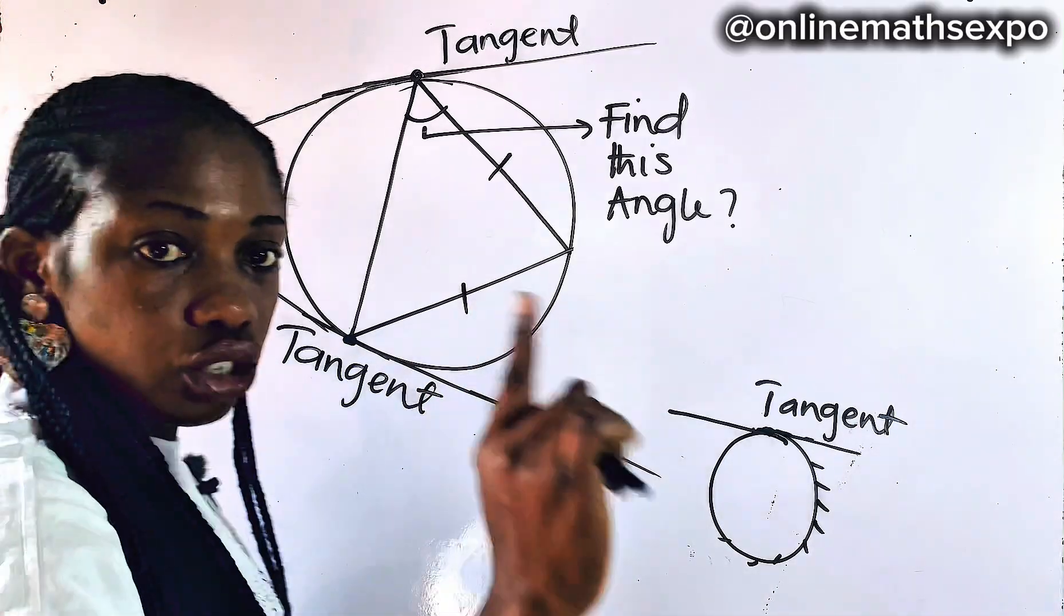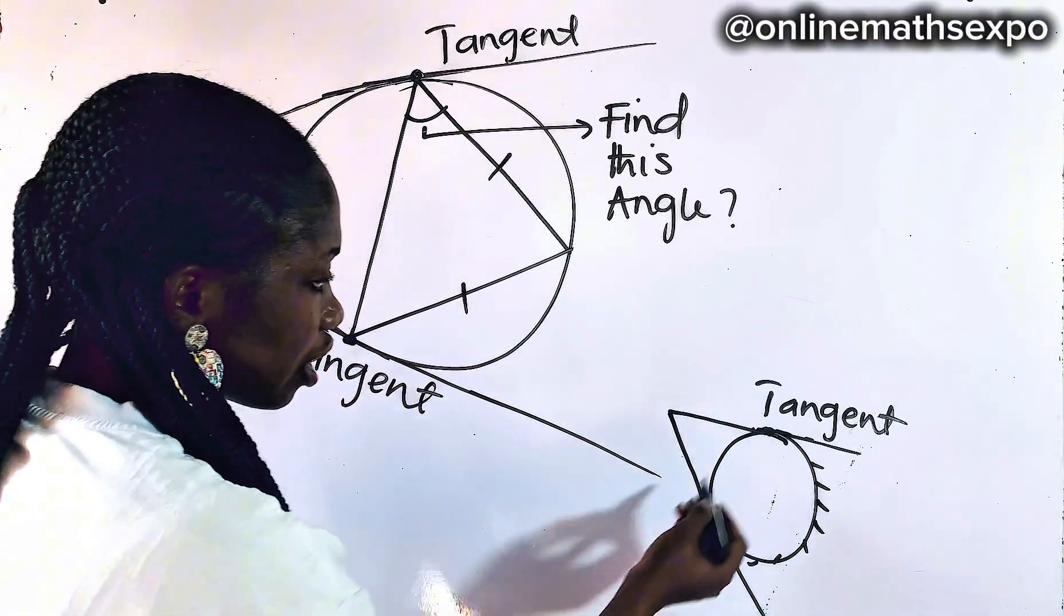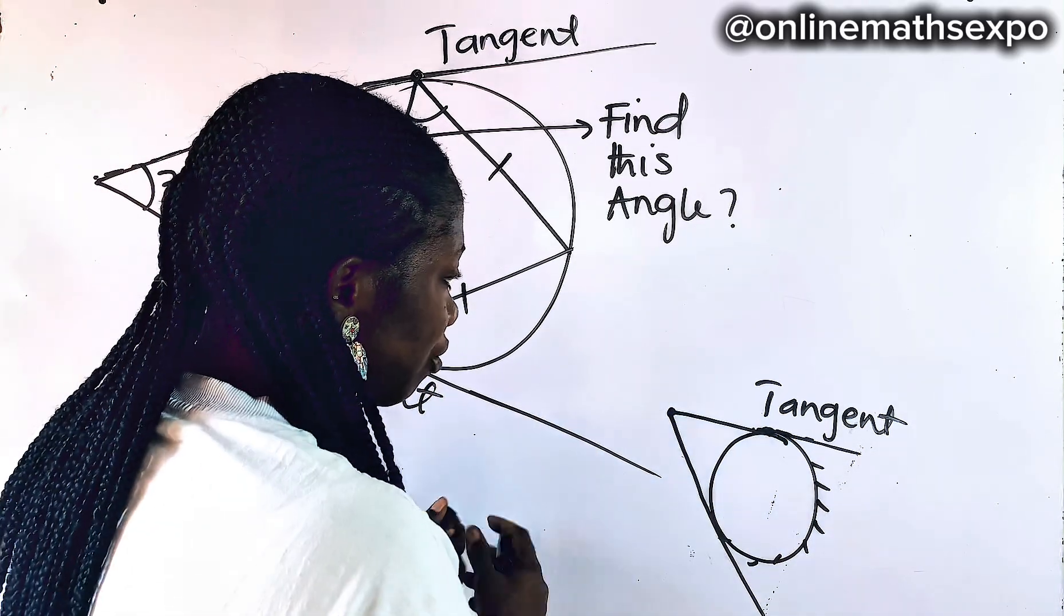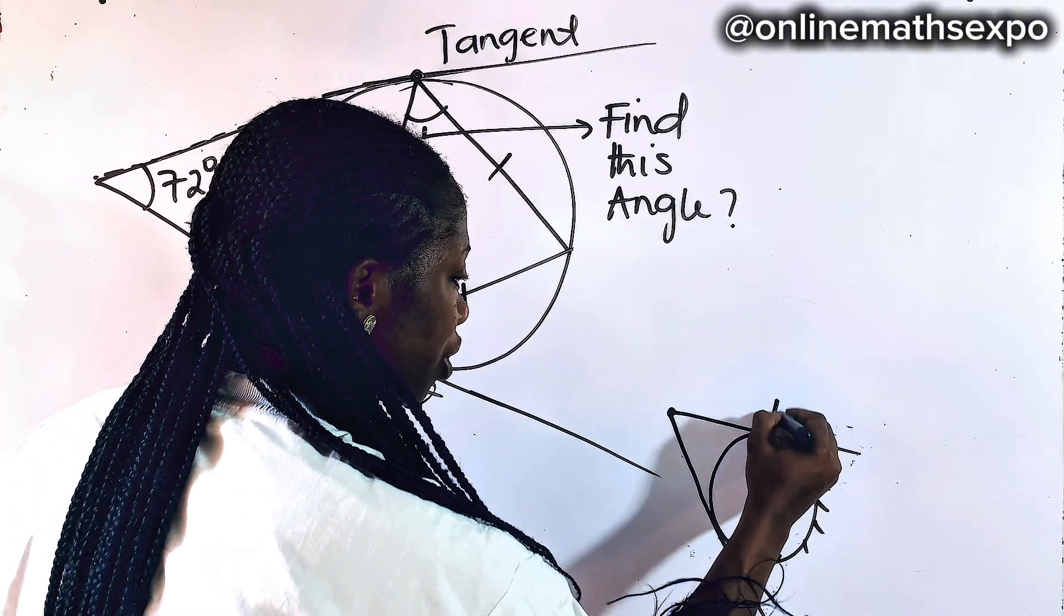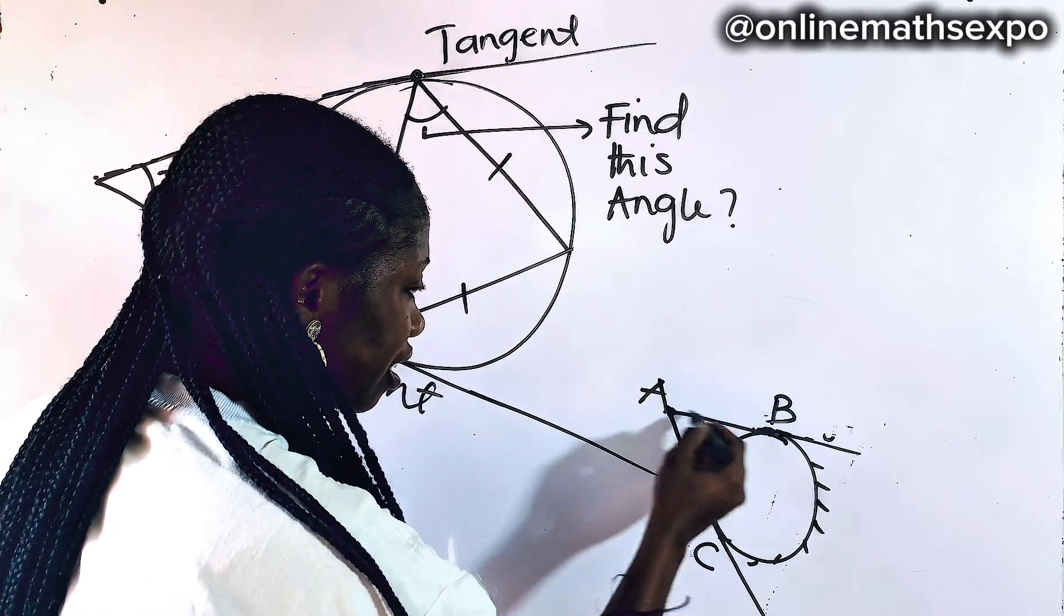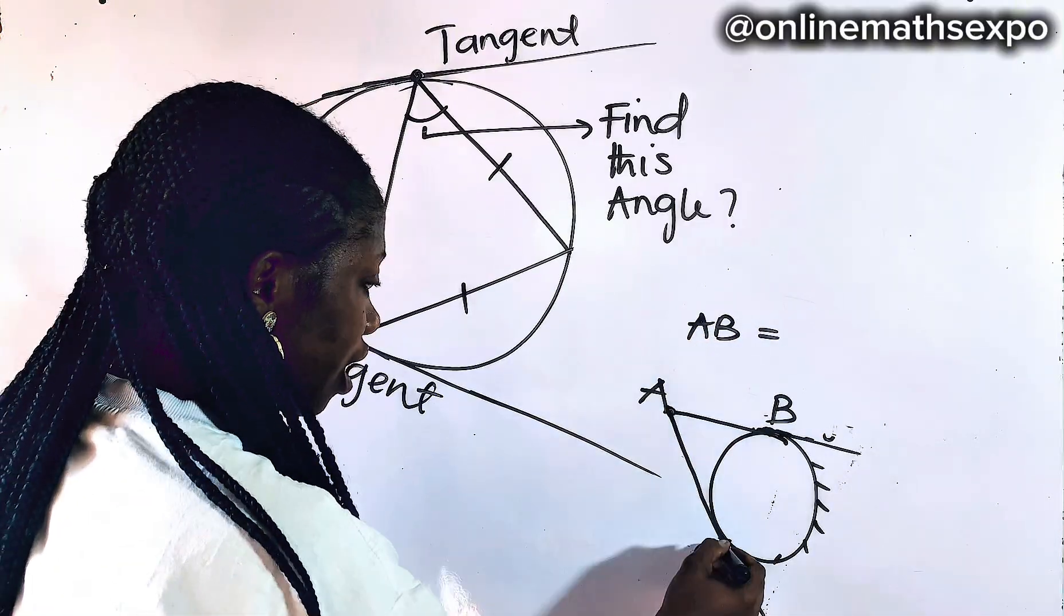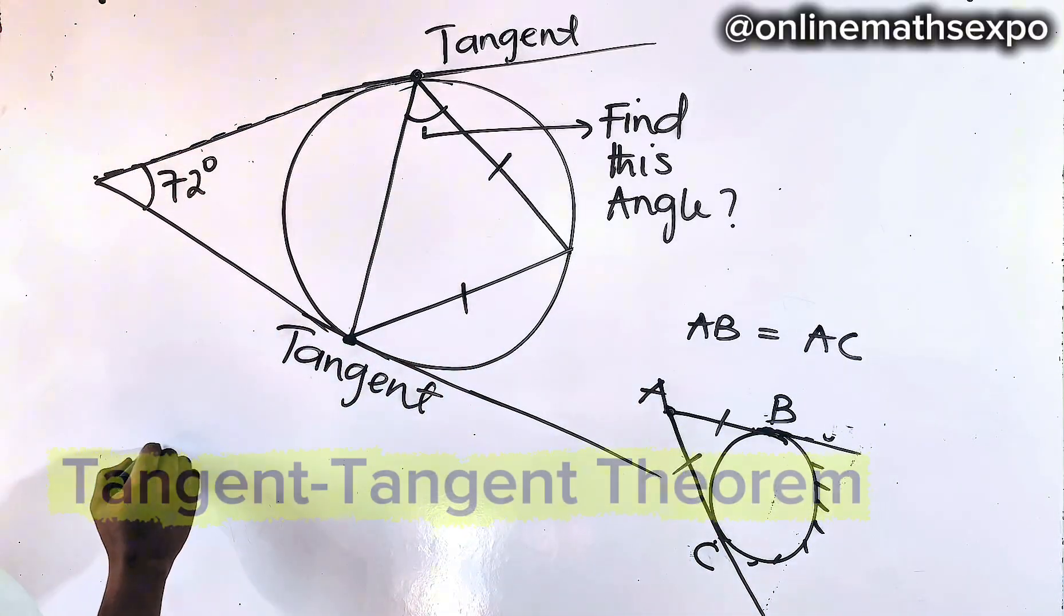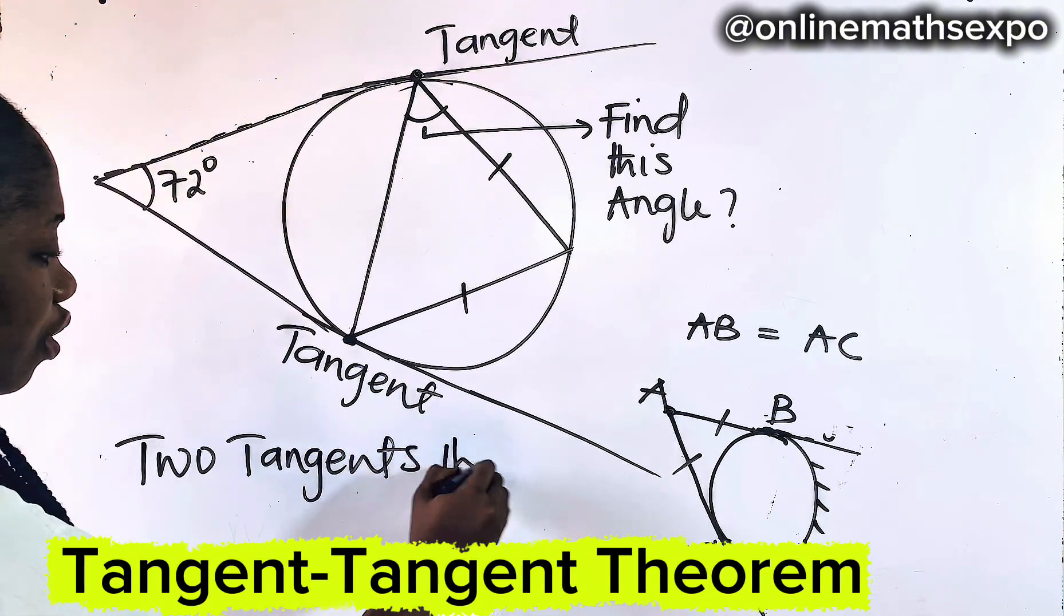Now, having understood this, remember this theorem. Whenever I have two tangents drawn such that the two tangents are touching at a point, if I label here B, and here is C, and here is A, the theorem says that this length AB is equal to this length AC. These two lengths are the same. What is your reason? Your reason is the two-tangent theorem.